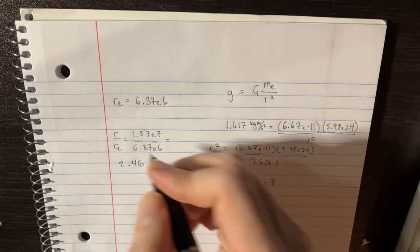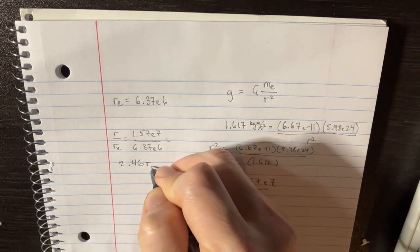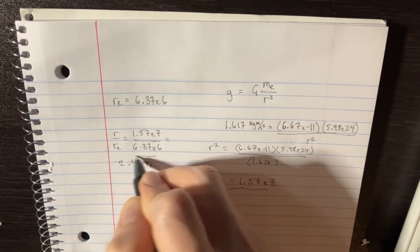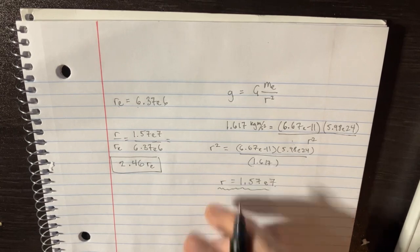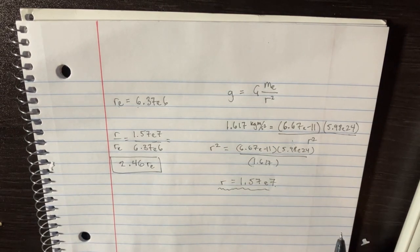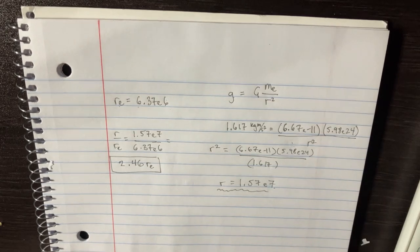And that's basically 2.46 R_E. That is the answer of part b. Great. Hopefully that was pretty helpful. You know, it's kind of difficult.